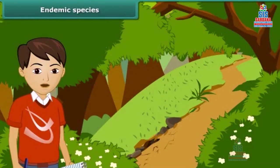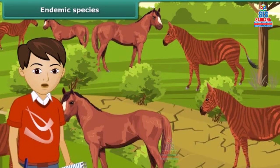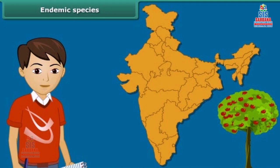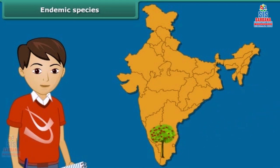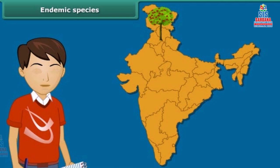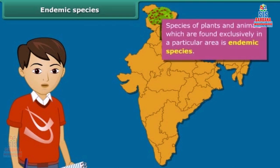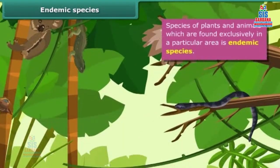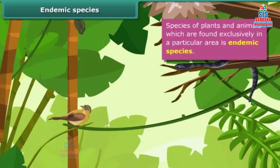Now let us learn about endemic species. A species is a group of populations which are capable of interbreeding, and members of a species have common characteristics. Do you find an apple tree growing in south India? No — apple trees are usually found in the northern parts of India. Thus, species of plants and animals which are found exclusively in a particular area are called endemic species.